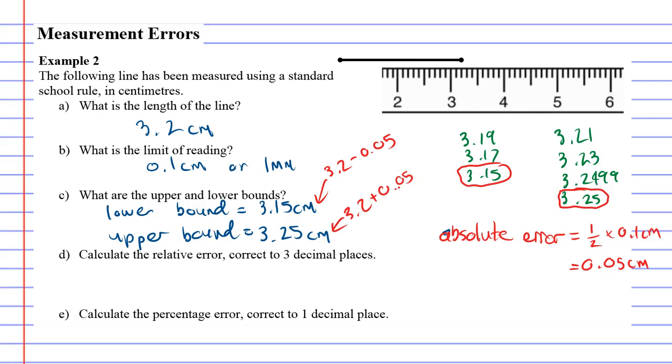Question E: calculate the percentage error. Just like before, I'm going to find the percentage error. Our fraction involves taking the absolute error, 0.05, and putting it over the measurement.